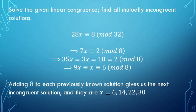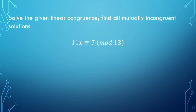So if you used the process, it should have been pretty straightforward. All right, just one more problem left here. Try to solve this guy on your own. Again, find all mutually incongruent solutions. 11x is congruent to 7 mod 13. So press pause on the video now. Once you think you have all the answers, press play to see if you are correct.